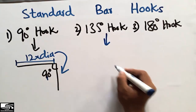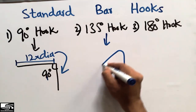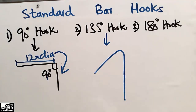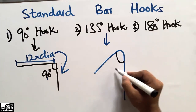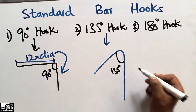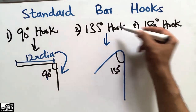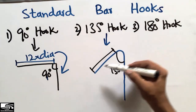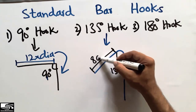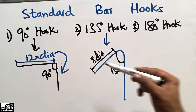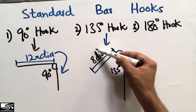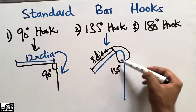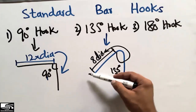In the case of the 135-degree hook, we have a hook bent at 135 degrees, and that's why this hook is known as the 135-degree hook. The bending length in this case is 8 times the diameter of the bar (8D), where 8 is the factor and D is the diameter of the bar.